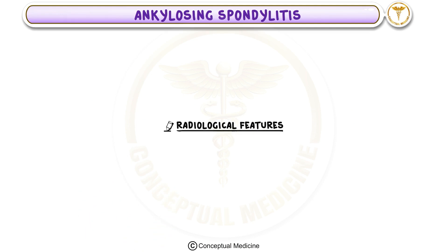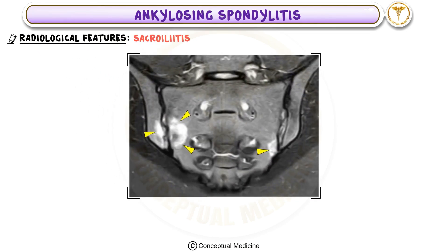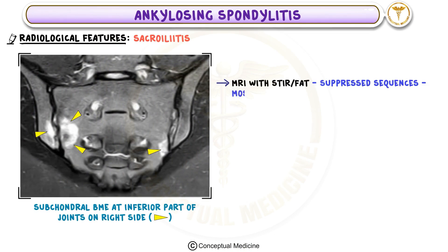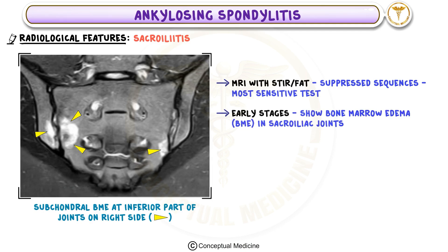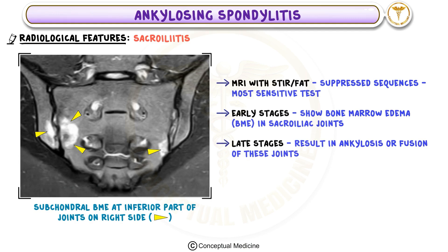Imaging plays a critical role in diagnosing and tracking the progression of AS. For sacroiliitis, MRI with STIR (short tau inversion recovery) or fat-suppressed sequences is the most sensitive test, particularly in early disease. Early stages show bone marrow edema in the sacroiliac joints, while late stages result in ankylosis or fusion of these joints.